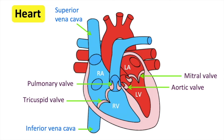The superior vena cava delivers blood into the heart from the superior part of the body. This includes the head, neck, arms and chest. The inferior vena cava delivers blood into the heart from inferior parts of the body.